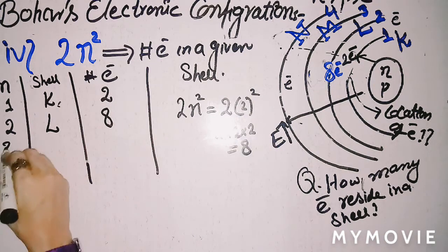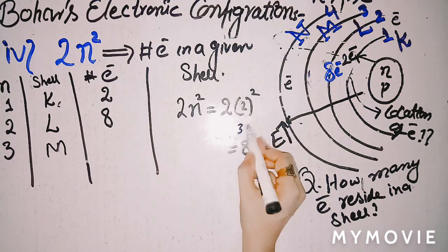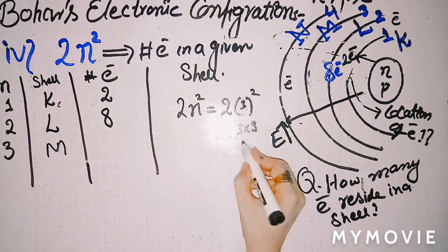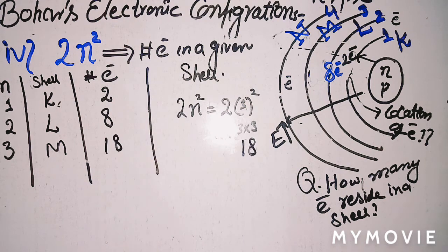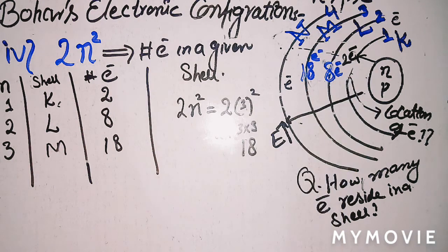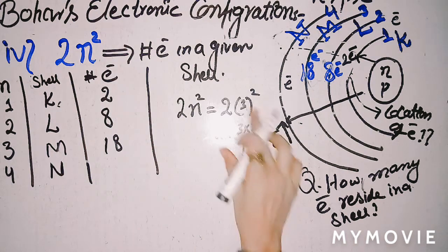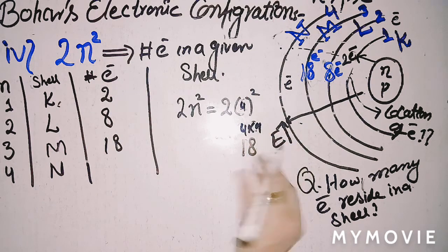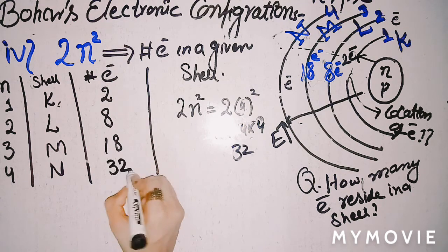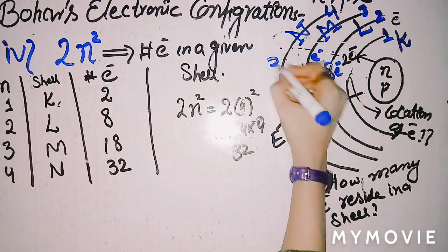If n=3, the shell is M, and the number of electrons is 2 × 3² = 2 × 9 = 18. So the third shell contains 18 electrons. If n=4, the shell is N, and the number of electrons is 2 × 4² = 2 × 16 = 32. So the N-shell contains a maximum of 32 electrons.